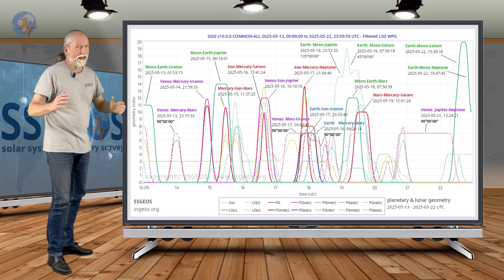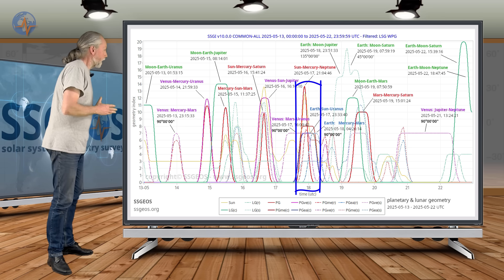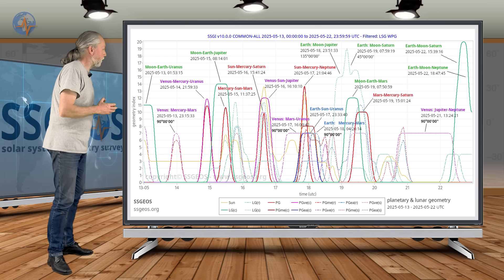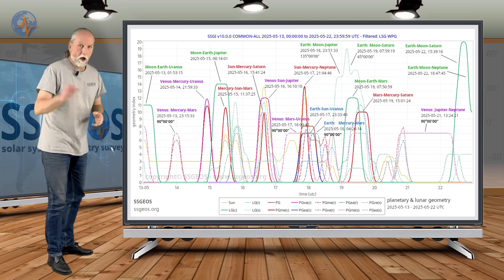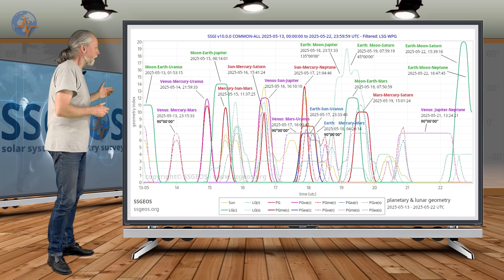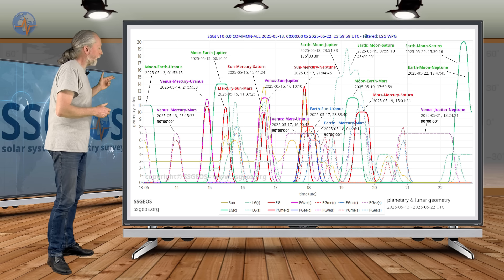Then later on the 17th, again a peak, a convergence: Sun-Mercury-Neptune in particular, and a right-angle Venus-Mars-Uranus. Really critical planetary geometry.